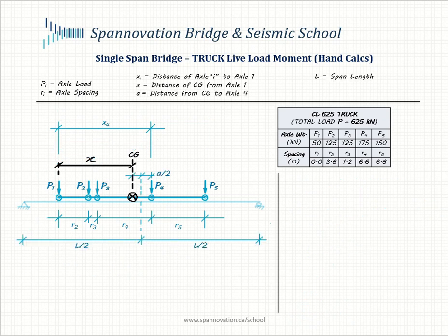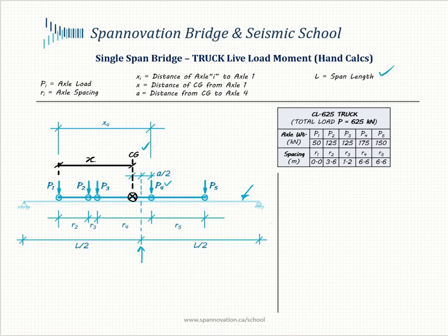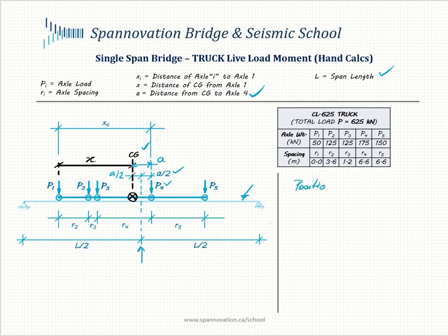The next step is to position the truck on our simple span to maximize the moment. We position it so that the CG and the nearest axle — in our case axle P4 — are equidistant from the mid span. The center of the span is at L/2, and both the CG and P4 should be at a distance of A/2 from mid span, where A is the total distance between the CG and P4.